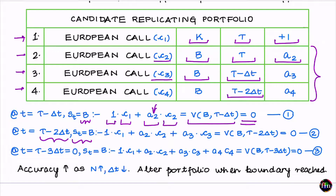Since I am again standing at the red boundary, the value of the target option is zero, and I want the replicating portfolio to match this. In equation 2, a2 is already known from equation 1, so I substitute that value in and solve for the only remaining unknown, which is a3.